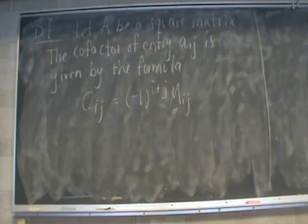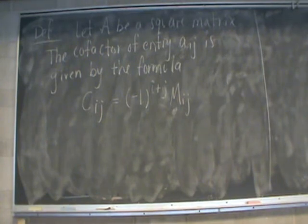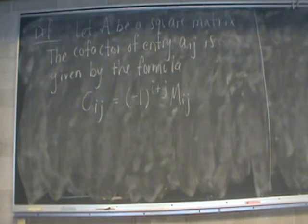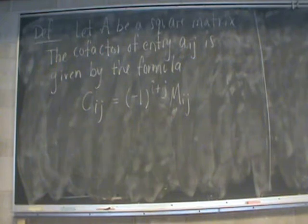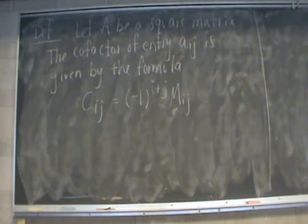Now that we've defined minors, the next definition is the cofactor — the most important building block we'll use going forward. Cofactors help us calculate determinants of very large matrices. The cofactor of entry Aij of a square matrix A is given by the formula: (−1)^(i+j) times the corresponding minor Mij. We use capital M for minor and capital C for cofactor.